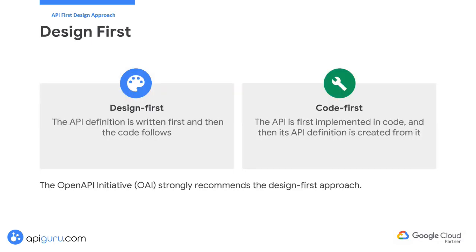There are two main approaches to creating API definitions: code-first and design-first. In the code-first approach, the API is built in code first and its API definition is added later using commands or annotations. This method is often more straightforward since it doesn't require learning a new language. In contrast, the design-first approach involves creating the API definition before coding, allowing developers to start with a clear structure and use tools to generate boilerplate code.